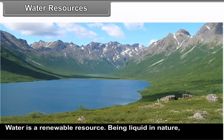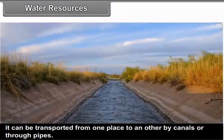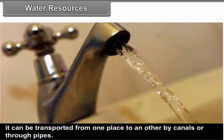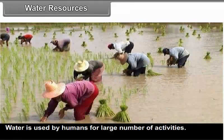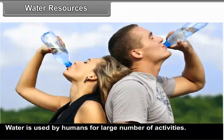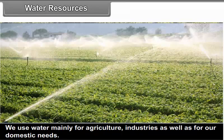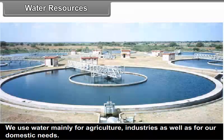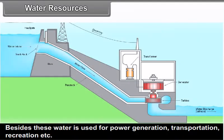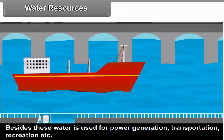Water is a renewable resource. Being liquid in nature, it can be transported from one place to another by canals or through pipes. Water is used by humans for a large number of activities. We use water mainly for agriculture, industries as well as for our domestic needs. Besides these, water is used for power generation, transportation, recreation, etc.